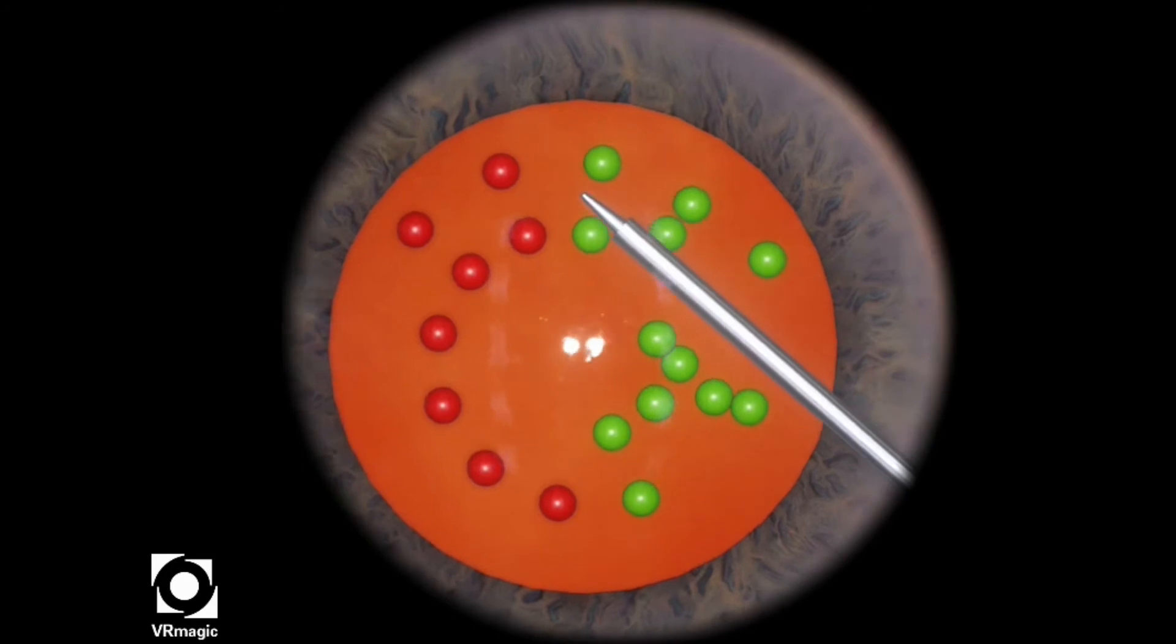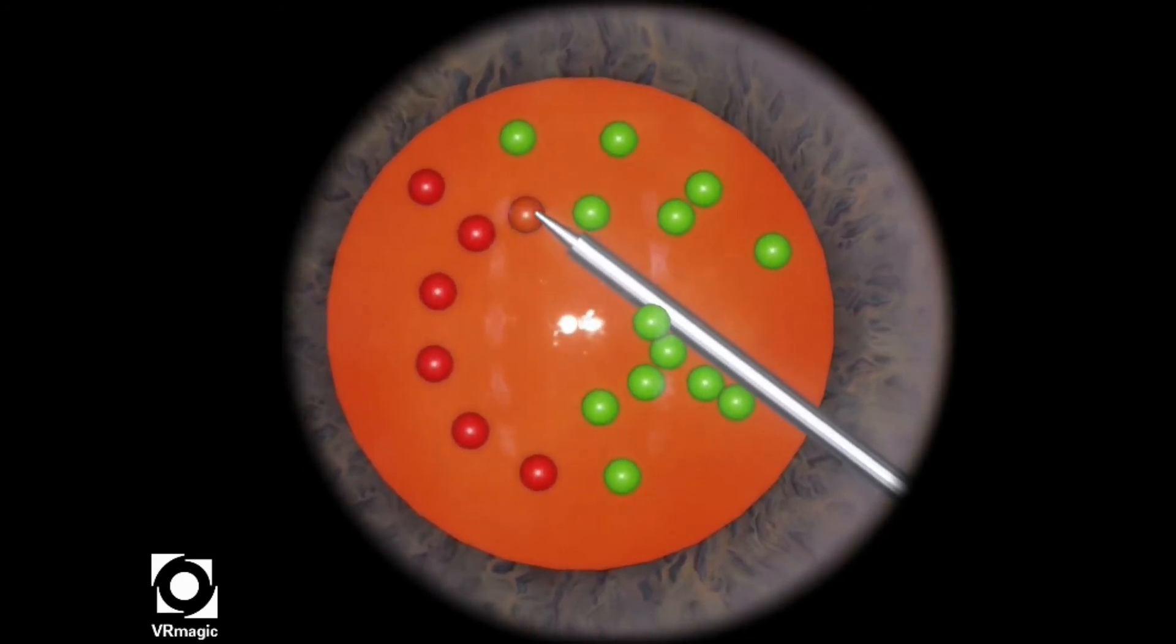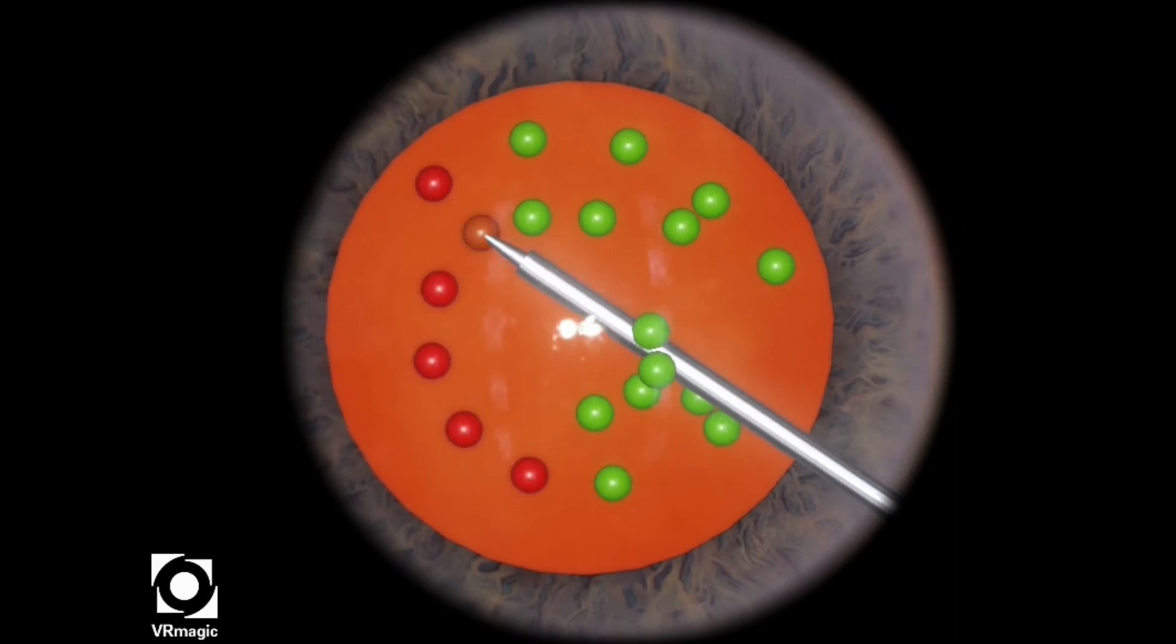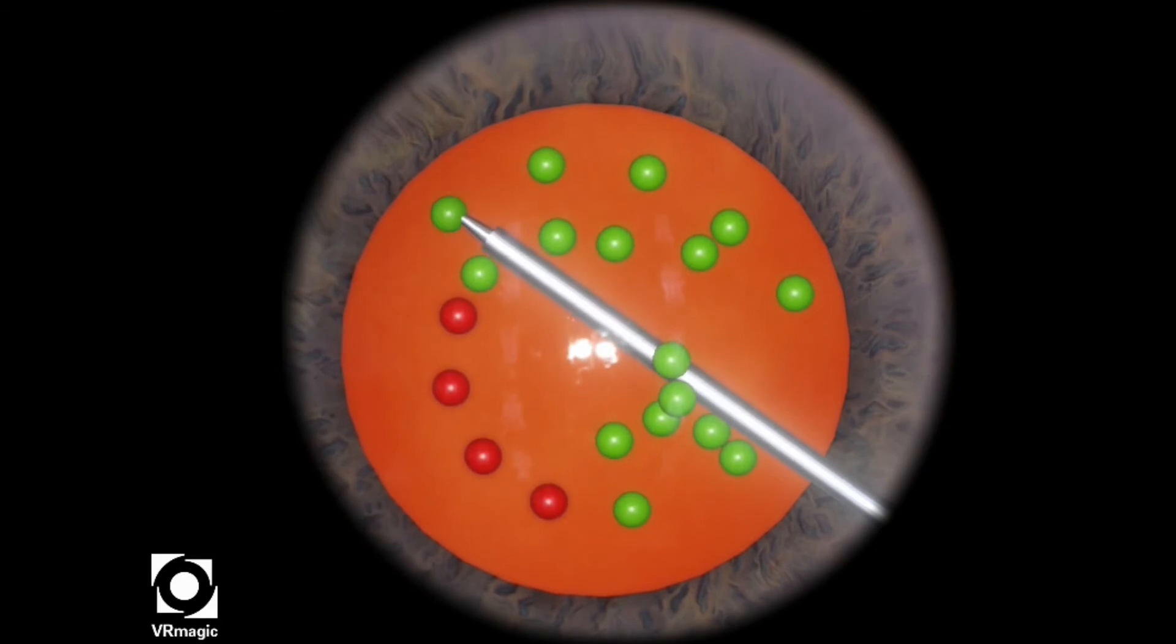So starting from the right all the way to the left. So that way, I don't accidentally move my tip over a sphere I didn't intend to shade and get points taken off.